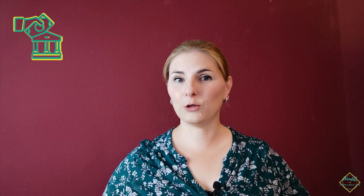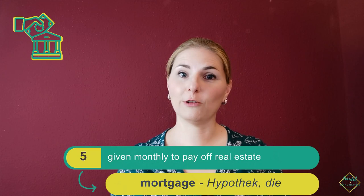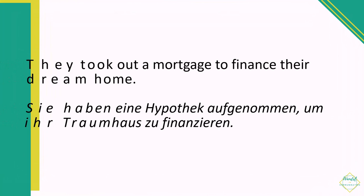If you want to buy a house and the bank helps you finance it and you have to pay this kind of money back, it's called a mortgage. Please make sure not to pronounce the T: mortgage. Example sentence: 'They took out a mortgage to finance their dream home.' In German: Sie haben eine Hypothek aufgenommen, um ihr Traumhaus zu finanzieren.